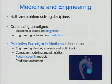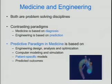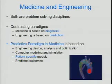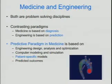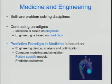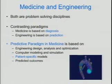On to medicine and engineering. They're both problem-solving disciplines, but they've really utilized contrasting paradigms historically. Medicine is based on diagnosis — you make predictions that are essentially statistical, based on experience. Whereas engineering is based on predictions from analysis. The predictive paradigm in medicine utilizes engineering methodology: design, analysis, optimization, iterating through those processes to get the product you want. It utilizes computer modeling and simulation, and perhaps most importantly, it's patient-specific models. You want to build models of individual patients to say what will happen to them when an intervention is performed, rather than saying there's a 50% chance of this working or not. You predict the outcomes.